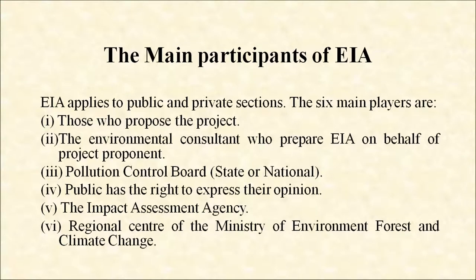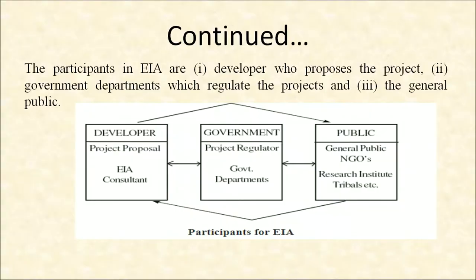The main participants of EIA: EIA applies to public and private sectors. The six main players are: those who propose the project, the environmental consultant who prepares the EIA on behalf of the project proponent, the pollution control board (state or national), the public (who have the right to express their opinion), the impact assessment agency, and the regional center of the Ministry of Environment, Forest and Climate Change. Participants are the developer who proposes the project, the government department which regulates the project, and the general public.